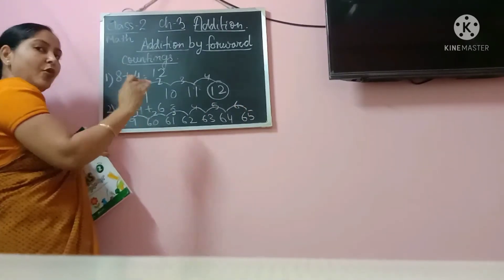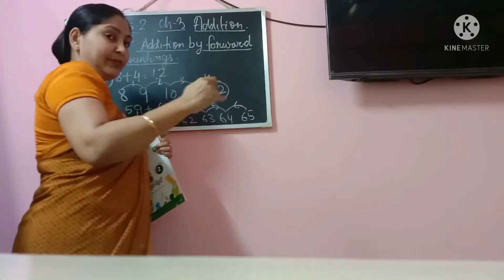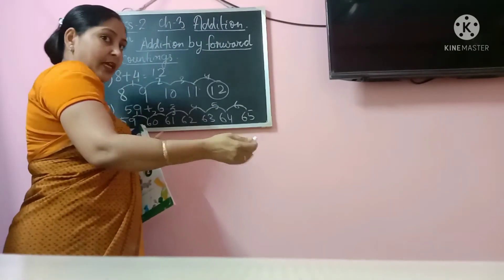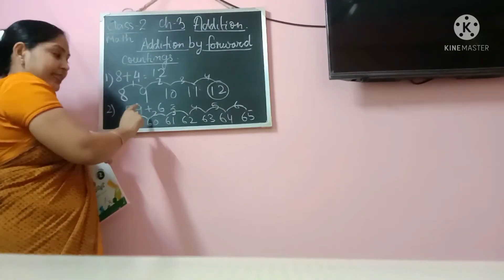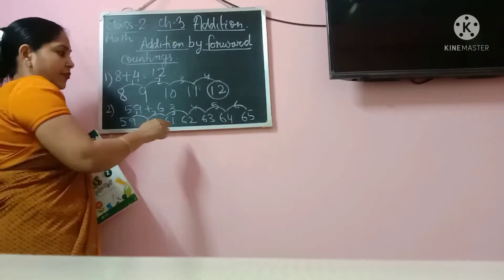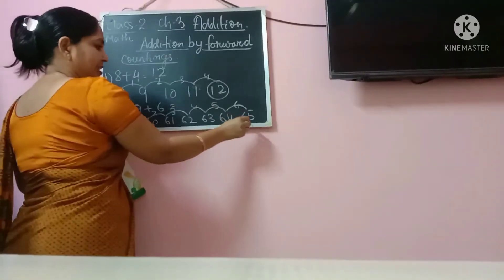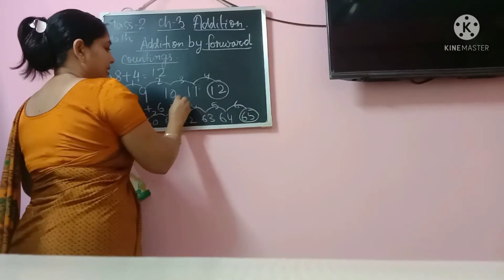So we have moved 6 steps forward to get 59 plus 6. So 59 plus 6, finally we are getting 65.